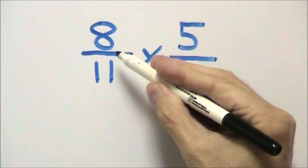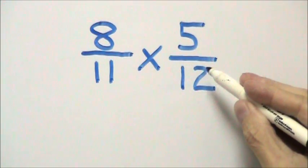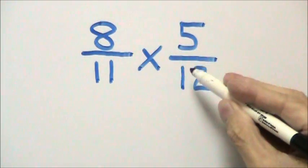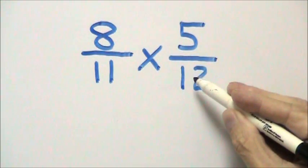In the problem 8 11ths times 5 12ths, we can cross-cancel the 8 and the 12, but since 8 doesn't go into 12 evenly,